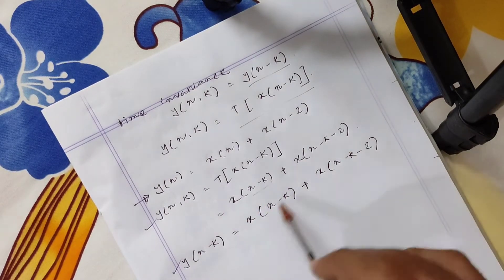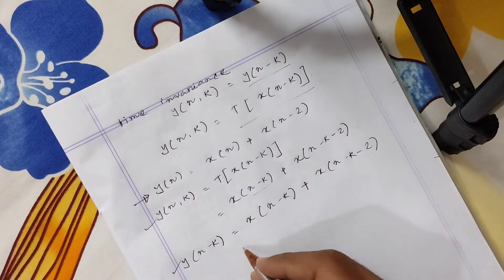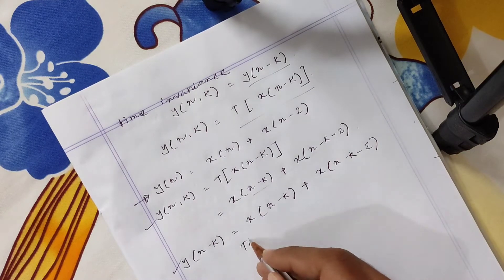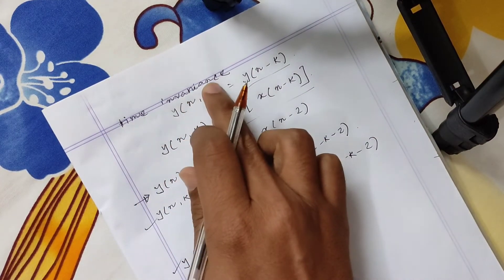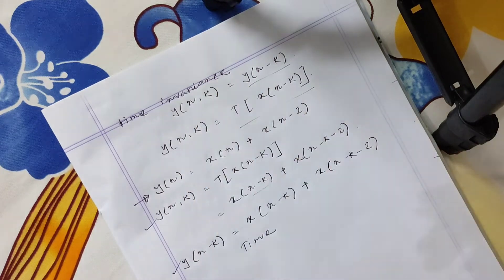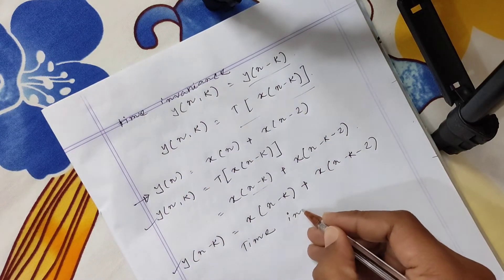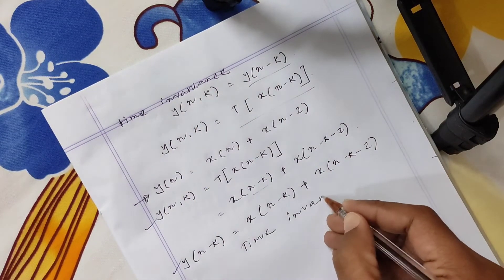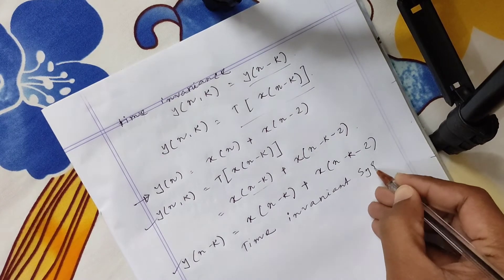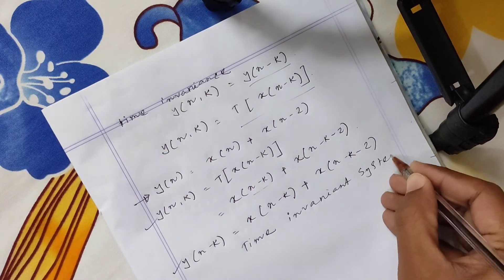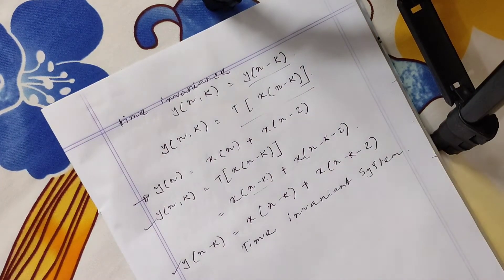y[n,k] and y[n-k] are the same. So since they are equal, this system is a time-invariant system.